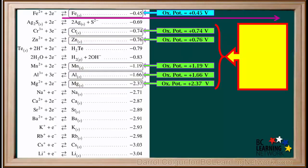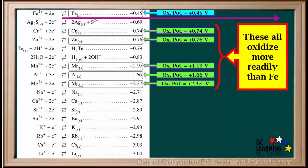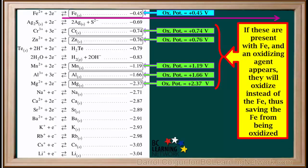Notice that these metals below iron all have higher oxidation potentials than iron, which means they all oxidize more readily than iron. So if any of these are present with iron and an oxidizing agent like oxygen appears, these will oxidize instead of the iron, thus saving the iron from oxidation. Let's look at an example.